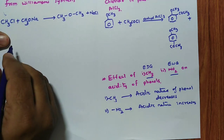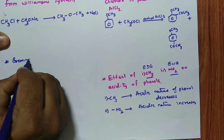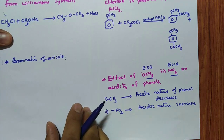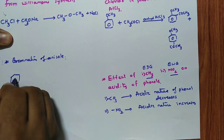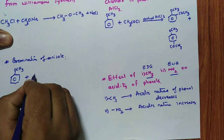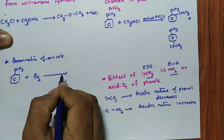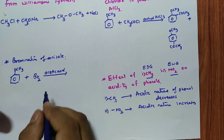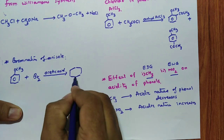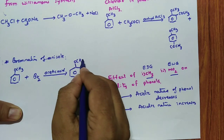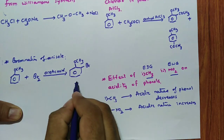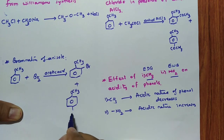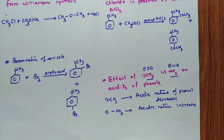Bromination of anisole — bromine reacts with anisole. Anisole formula: OCH3 on benzene. It reacts with Br2 in presence of acetic acid. Since OCH3 is an ortho-para director, you are going to get ortho and para products: OCH3 with Br at ortho position, plus OCH3 with Br at para position.